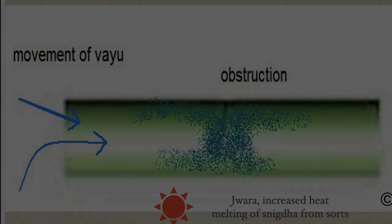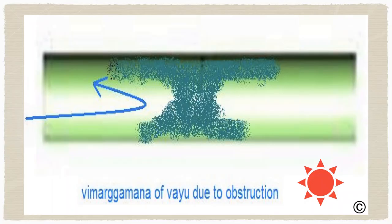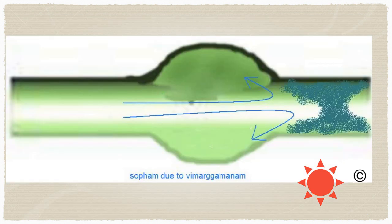Due to obstruction, there will be a vimarga gamana of vayu. Vata, which is supposed to move through the channels, starts moving in a backward or some other direction. Because of this, there will be a buildup of vata, which is represented by shofa. Imagine a single channel where vata is blocked — it builds up and gives pressure onto the walls of the channels, causing local shofa, just like a traffic jam.